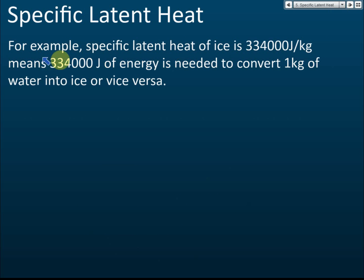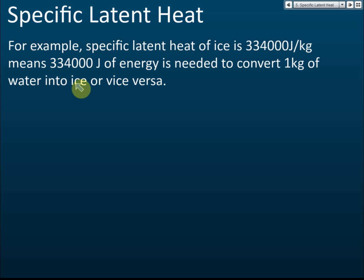For example, the specific latent heat of ice is 334,000 joules per kilogram. It means we need 334,000 joules of energy to convert one kilogram of ice to water, or one kilogram of water to ice. That is the energy needed to change the state of matter — solid to liquid, liquid to solid, liquid to gas, or gas to liquid.